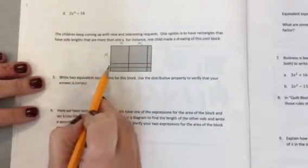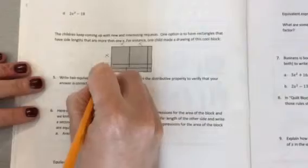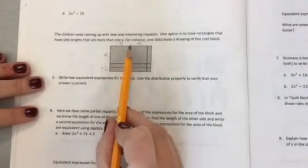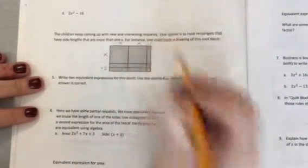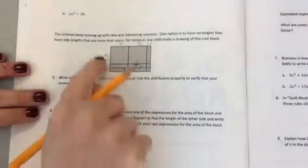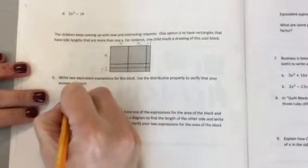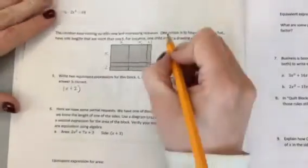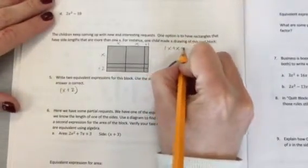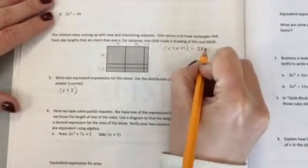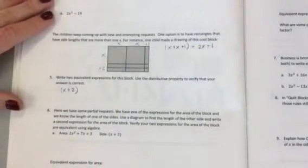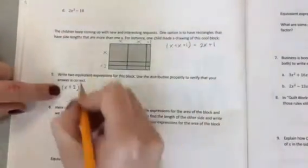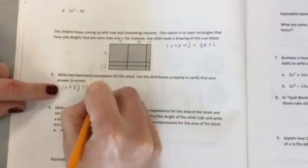So this side would be like x plus 2 and this side would be x plus x plus 1. So one side length or one factor will be x plus 2. The other side length is going to be x plus x plus 1 which simplifies to 2x plus 1. So we have x plus 2 times 2x plus 1.